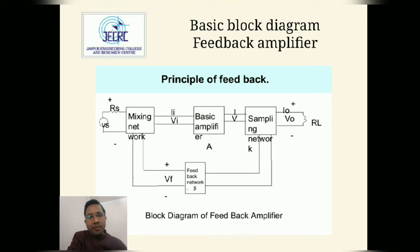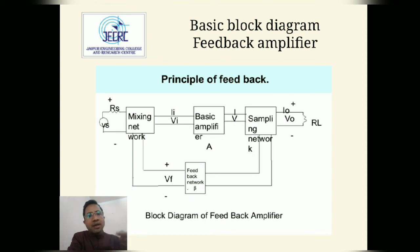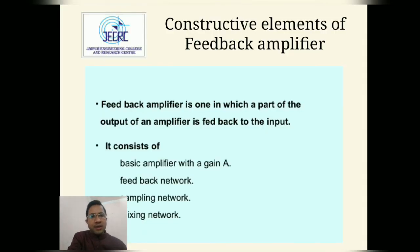This is the basic block diagram of a feedback amplifier. In this diagram we can see three blocks: mixing network, basic amplifier, and sampling network. Using the sampling network we take the output energy, and via the feedback network it is mixed with the input by the mixing network. For the basic amplifier we use a common emitter configuration, and for the feedback network we use passive components such as RLC.